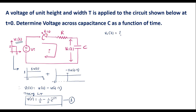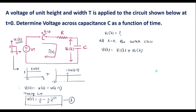At t equal to 0 the switch closes. Applying KVL to the loop, I can write Vi(t) = R·I(t) + Vc(t). This is equation 2. Here, Vc(t) = (1/C)∫I(t)dt, so from this we can write I(t) = C·d/dt[Vc(t)]. This is equation 3.